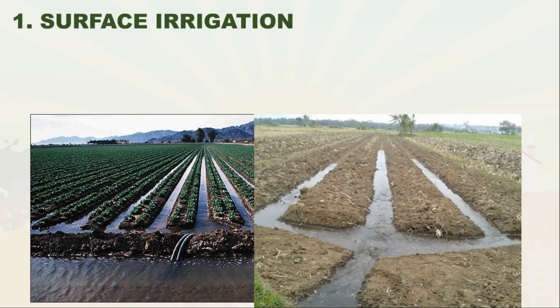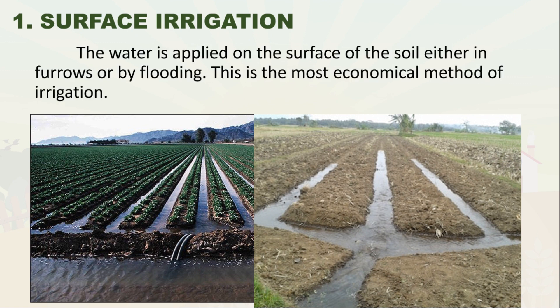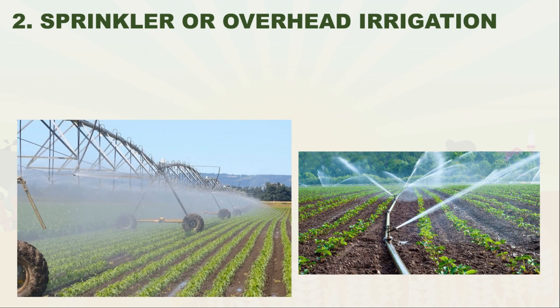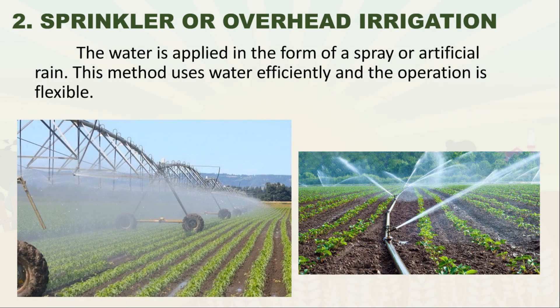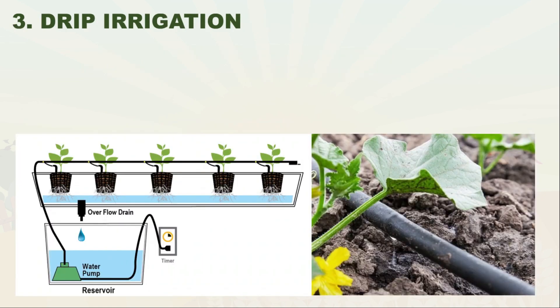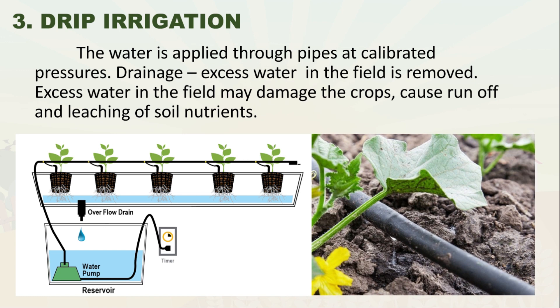Methods of irrigation: First, surface irrigation — water is applied on the surface of the soil either in furrows or by flooding. This is the most economical method and the most commonly used in the Philippines. Second, sprinkler or overhead irrigation — water is applied in the form of a spray or artificial rain; this method uses water efficiently and the operation is flexible. Third, drip irrigation — water is applied through pipes at calibrated pressures. Drainage involves removing excess water from the field, as excess water may damage crops, cause runoff, and leach soil nutrients.